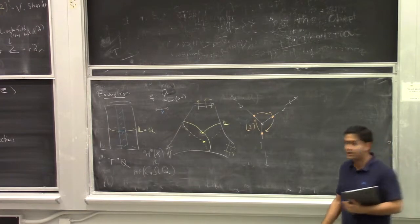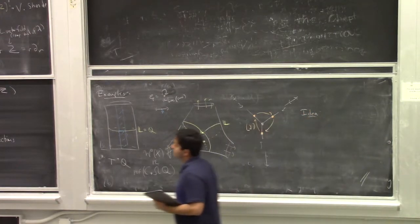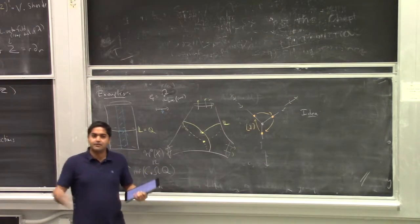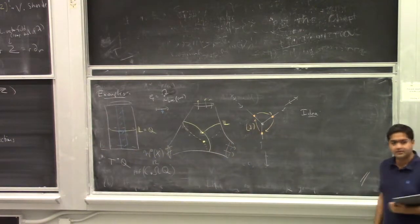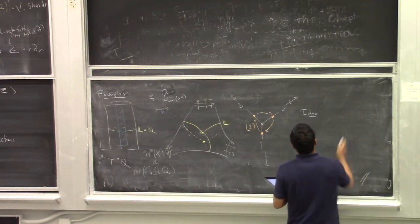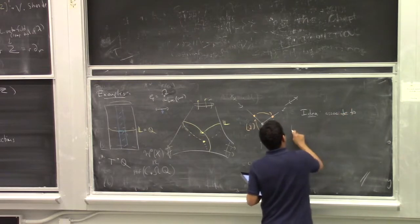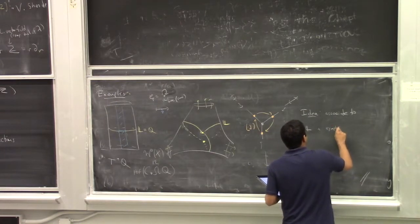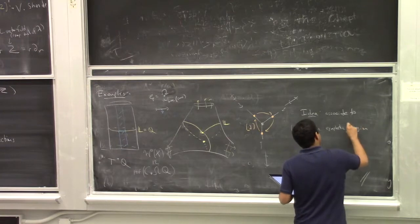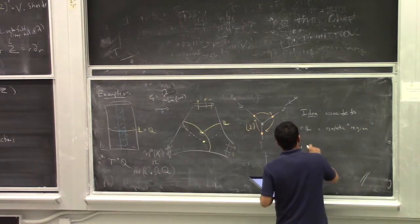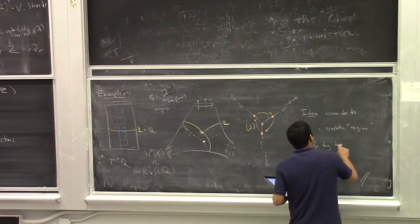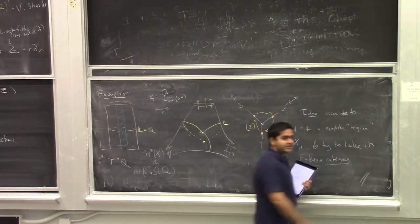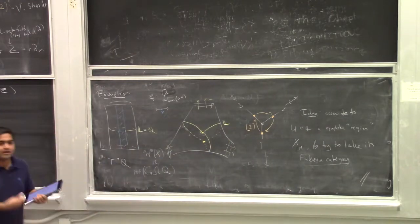Instead of going forward and telling you what I associate to pieces of the skeleton, we should try to do something more systematic symplectically. The idea is, if I'm interested in studying the wrapped Fukaya category of my total space, I should try to associate to pieces of my spine symplectic pieces of my Liouville manifold and study their Fukaya categories. We will try to associate to a nice subset of my spine a symplectic region X of U and take its Fukaya.